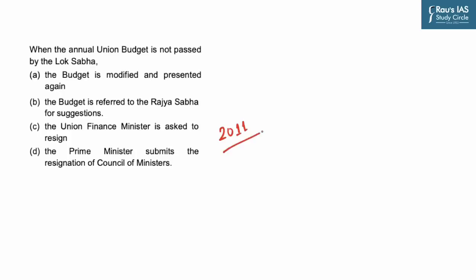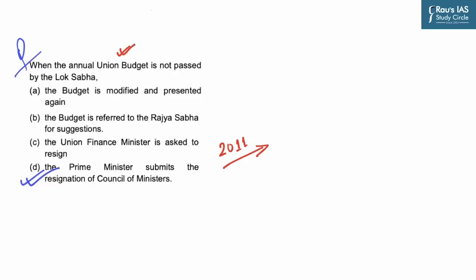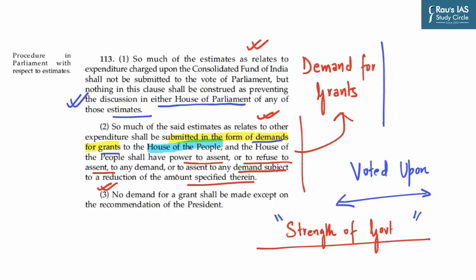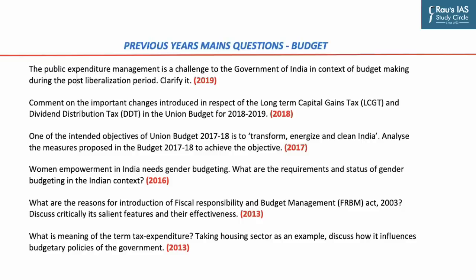A question asked by UPSC in the 2011 Prelims was: 'When the Annual Union Budget is not passed by the Lok Sabha, what happens?' Options were: (a) the budget is modified and presented again, (b) referred to the Rajya Sabha for suggestions, (c) the Union Finance Minister is asked to resign, or (d) the Prime Minister submits the resignation of the Council of Ministers. The correct answer was (d), because not passing the union budget shows the government lacks sufficient majority in the Lok Sabha, and hence the Prime Minister must submit his resignation.